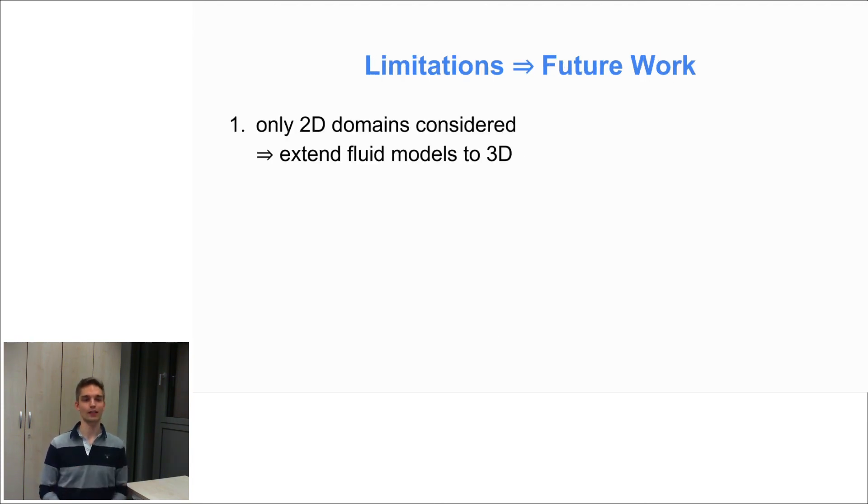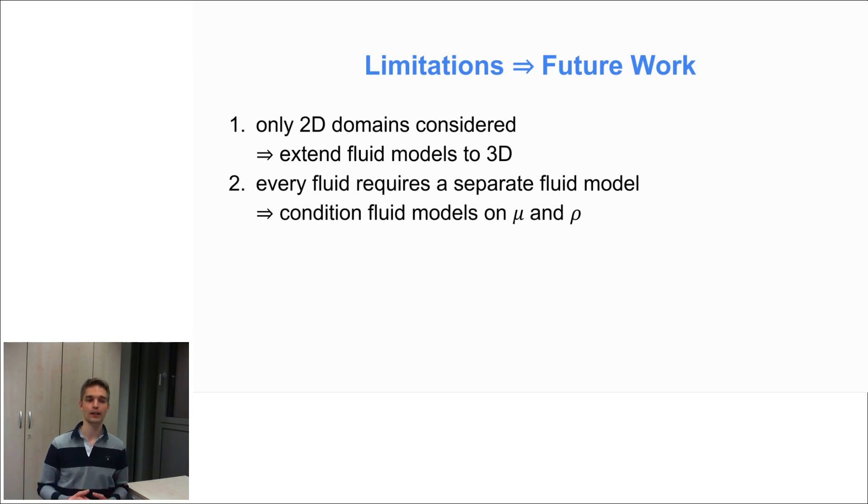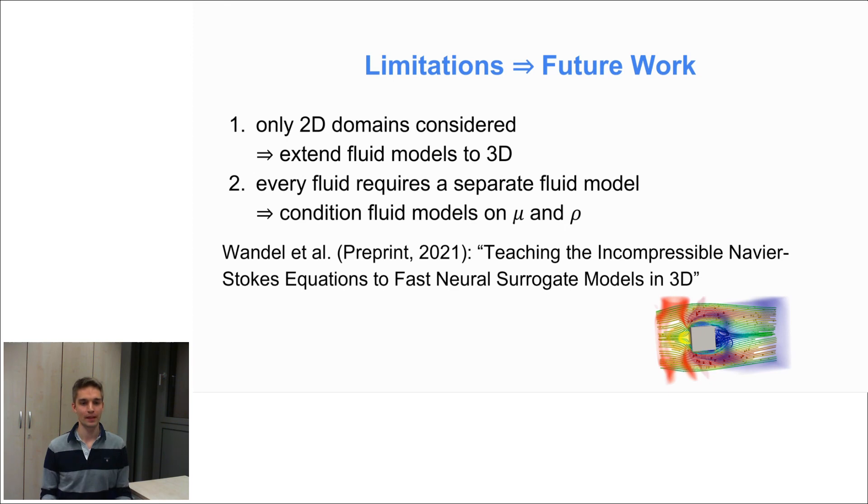But our work also comes with a few limitations. For example, at the moment, we only looked into 2D domains. And at the moment also, every fluid requires a separate fluid model. And actually, we already considered these limitations in another work. And if you're interested in it, then check out our preprint on teaching the incompressible Navier-Stokes equations to fast neural surrogate models in three dimensions.